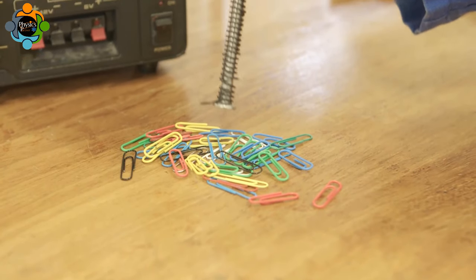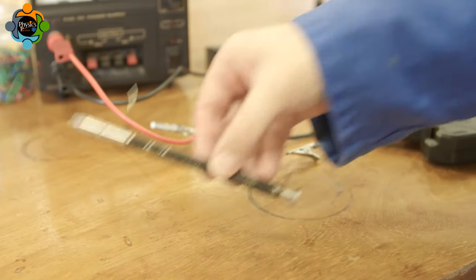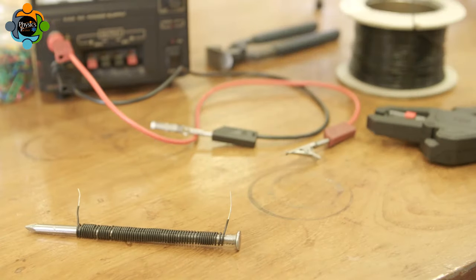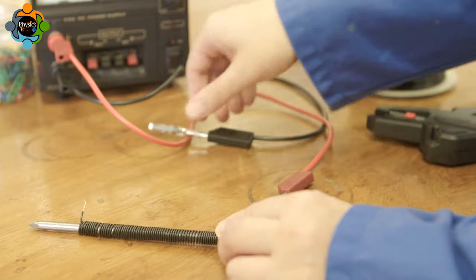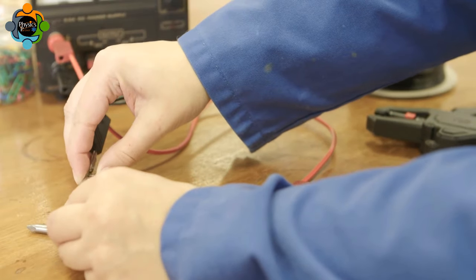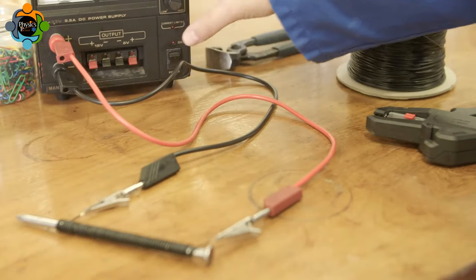To make the electromagnet work, a current must be passed through the coil. When the current passes through the wire, it induces a magnetic field which also magnetizes the nail.